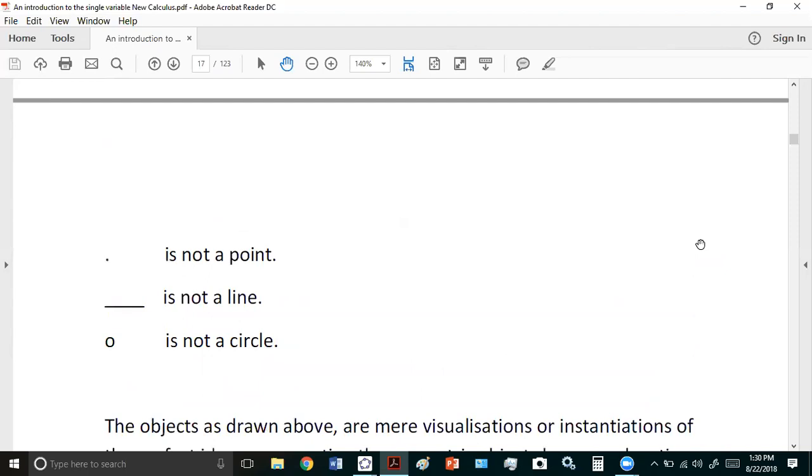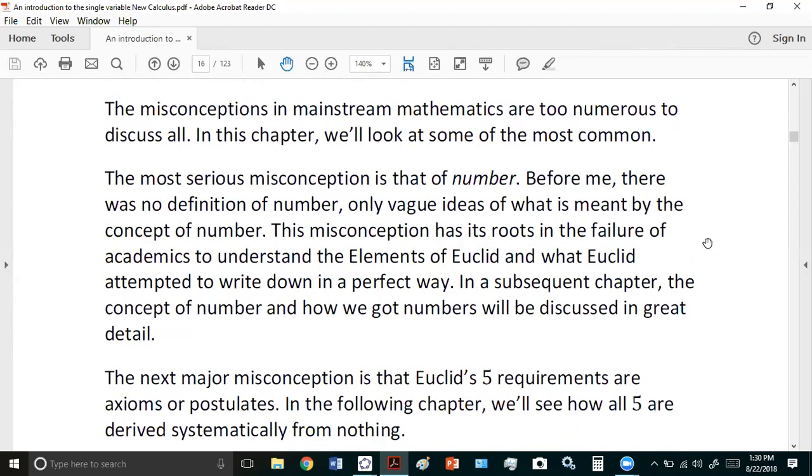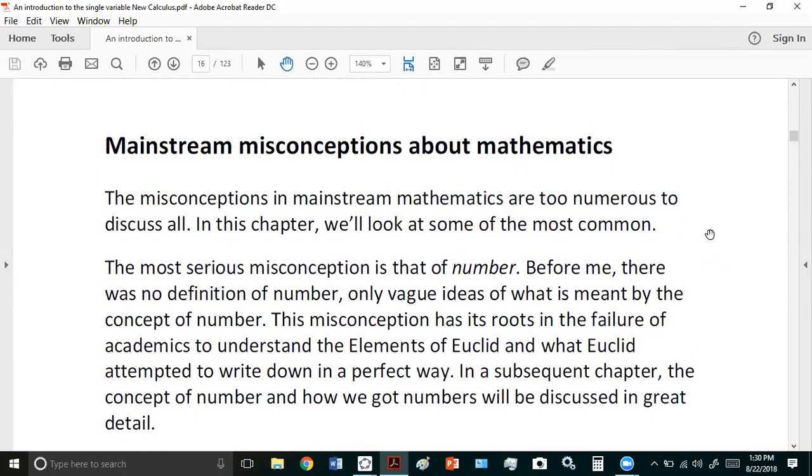The most important misconception in mainstream mathematics is the fact that no academic before me actually understood what the number concept means. In other words, they had no idea that a number describes the measure of a magnitude. They just had vague ideas of what is meant by the concept of number.